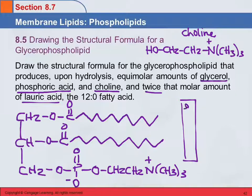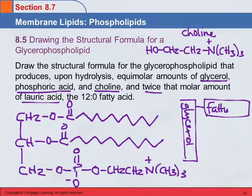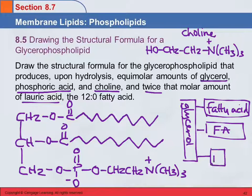It can be really helpful to think of those block diagrams: here we've got our fatty acid, another fatty acid, the phosphate, and then the alcohol — choline. So it's modular. Things form, and then you can hydrolyze or saponify them and take them back apart again.